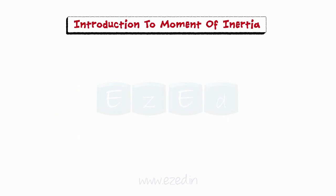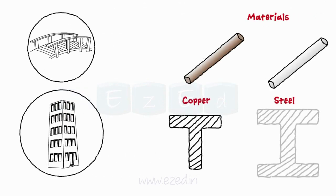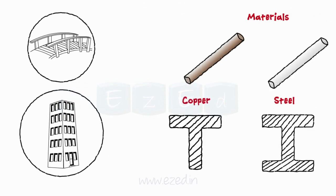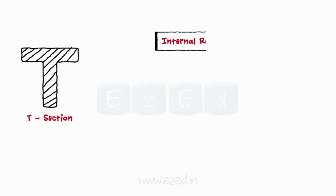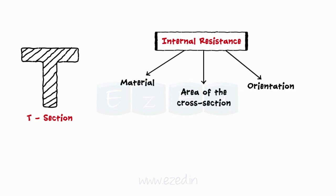In order to design the various components of engineering structures, engineers are required to select different materials and different cross-sections. The internal resistance of any section depends upon the material in use, area of the cross-section, and orientation of the cross-section with respect to the given loading.